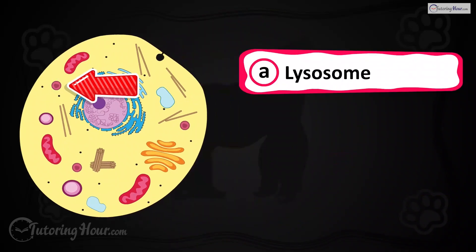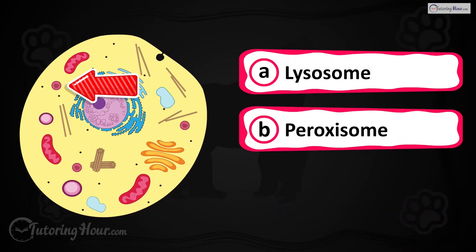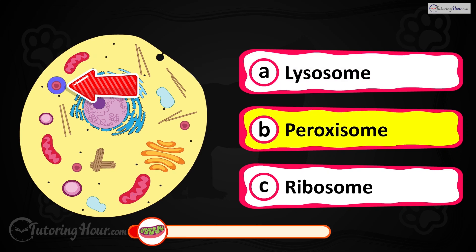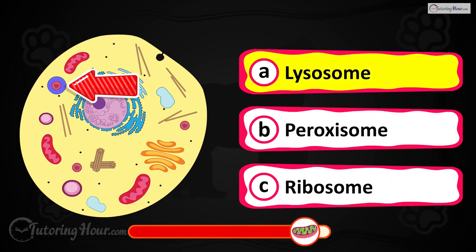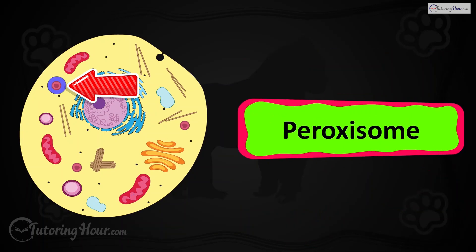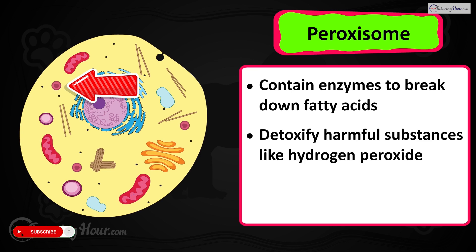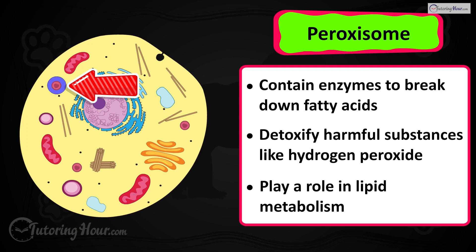Can you identify the highlighted part in the cell? Is it A) lysosome, B) peroxisome, or C) ribosome? The correct answer is the peroxisome. Peroxisomes contain enzymes that break down fatty acids and detoxify harmful substances like hydrogen peroxide. They also play a role in lipid metabolism.